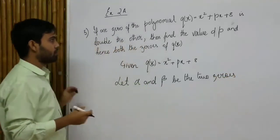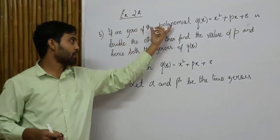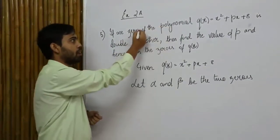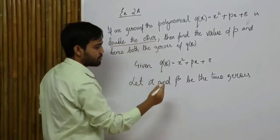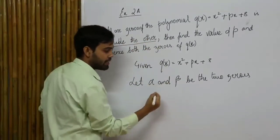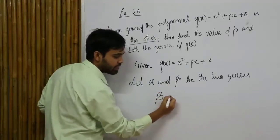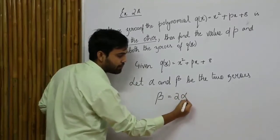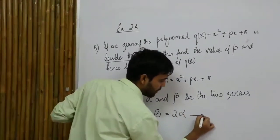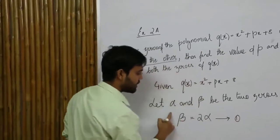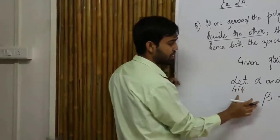Now looking at what the question is saying — one of the zeros of this polynomial is double the other. So if my roots are alpha and beta, that means beta is equal to two times of alpha. I am putting this as equation one, coming from the question.